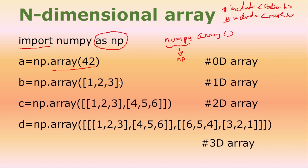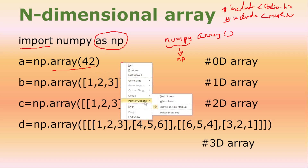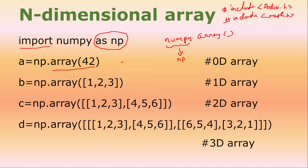Here we have created 4 arrays. The first one is a 0-dimensional array, because I am giving only a single element. When I give only a single element, there is no row and column — it is a single element, so by default the dimension becomes 0. Here is a food for thought: what is the difference between this statement and simply giving a = 42?